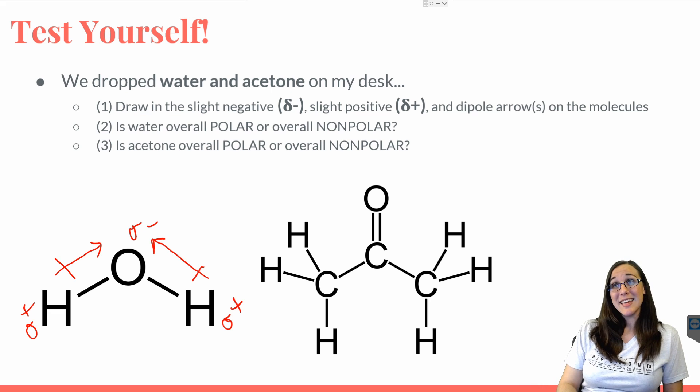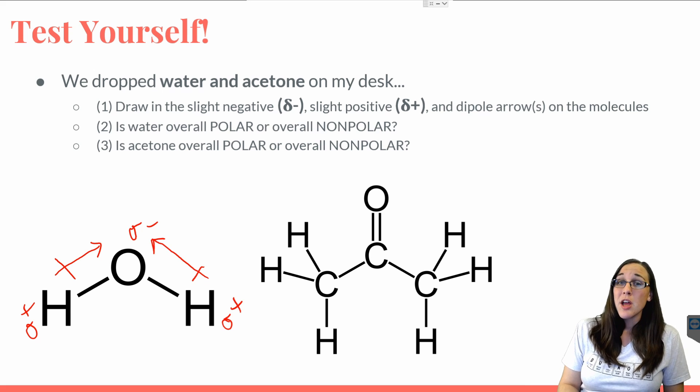In this case, if we're trying to determine whether or not water is overall polar or overall non-polar, we first need to go through the list of things that make a molecule non-polar. The first thing that makes a molecule non-polar is whether or not the atoms are the same. In this case, oxygen is not the same as hydrogen, so that rules that out.